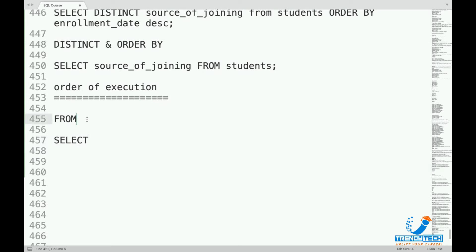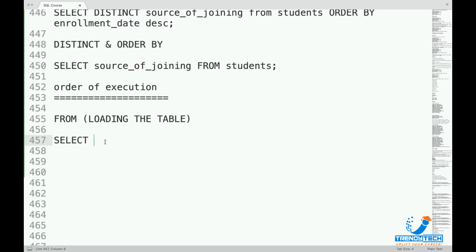When we say FROM table, it's like loading the table. So think of it as loading the table — SELECT * FROM students gives us the complete table loaded. After that, when we do SELECT source_of_joining, we are doing a projection. Projection means what columns we want to show — whether all columns or just one or two. So when we say SELECT source_of_joining, we are projecting only one column.